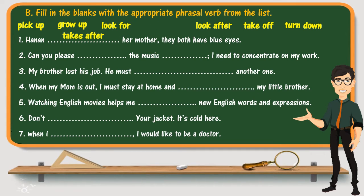Sentence two: 'Can you please ___ the music? I need to concentrate on my work.' You may understand that what is wanted is for the music to be stopped or at least lowered. So the answer is: can you please turn the music down? Pay attention to the object — the music — it is placed between the verb and the particle: turn the music down.